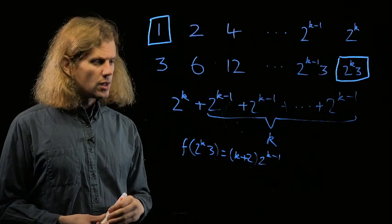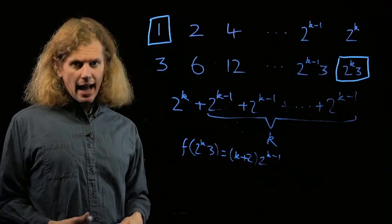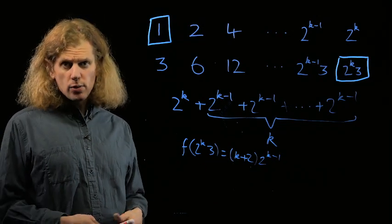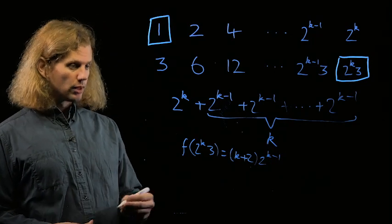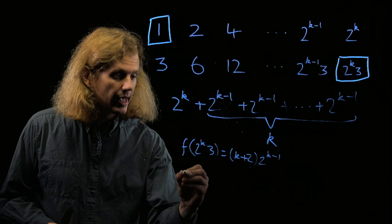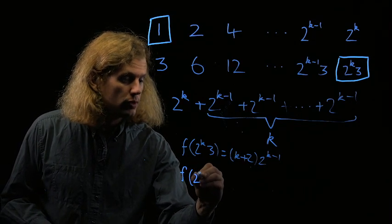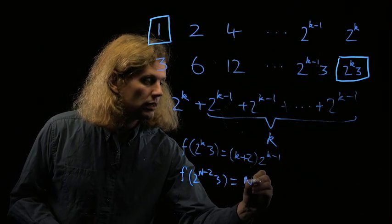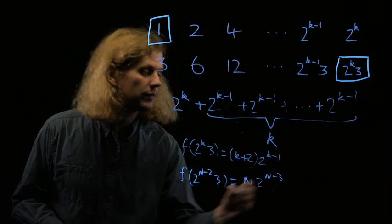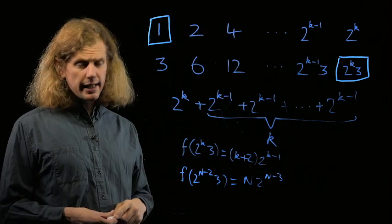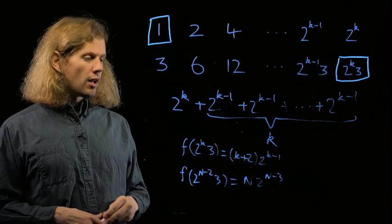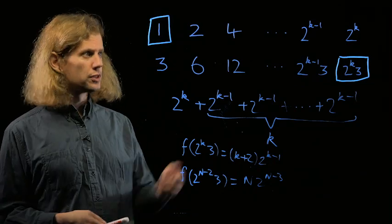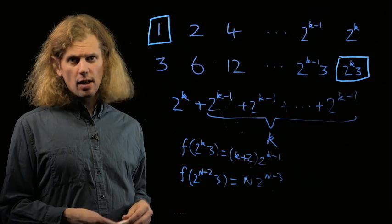Now, this is very good news for us. We wanted something that has n as a factor, and this bracket of k plus 2 here means we can choose k in order to get any factor we want pretty well. So if we want that factor of n, we can take f of 2 to the n minus 2 times 3, and that will be n times 2 to the n minus 3. And this will work provided n is big enough, but if we check it quickly, we realize that the only cases where this doesn't work are cases we've already done in the earlier example of 2 to the k itself. So this example does everything we need.